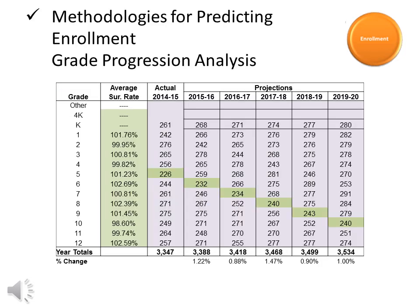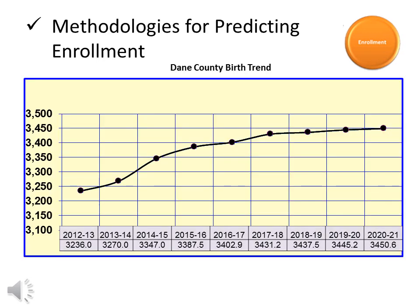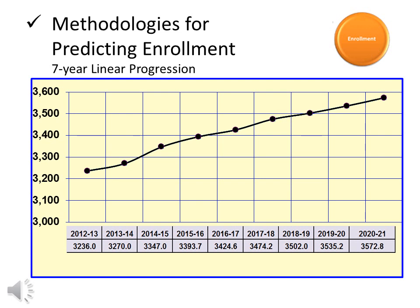Various methods are used for predicting enrollment. Combined, these methods can provide an accurate picture of what we can expect in our school-age population. The Applied Population Labs has performed a number of enrollment studies for the district, and a copy of the most recent study is posted on our website. The example shown here is a grade progression analysis, which uses past history to predict enrollment for the next five years. This table shows enrollment will likely increase by 200 students by 2019. Another method for predicting enrollment is the use of Dane County birth trends, which yields very similar results to the grade progression analysis.